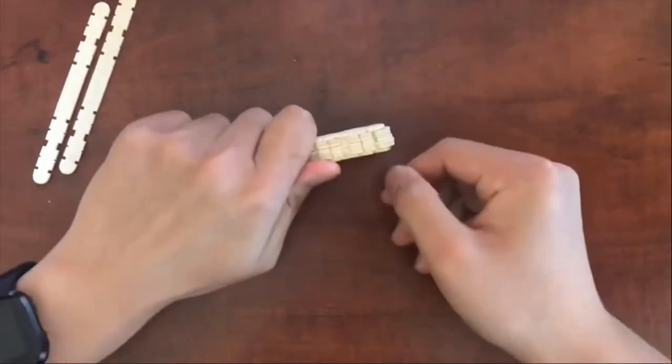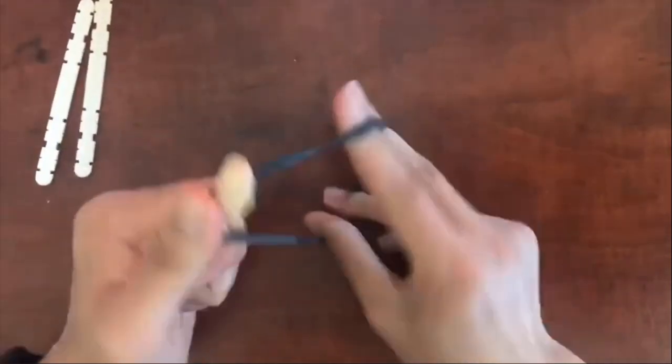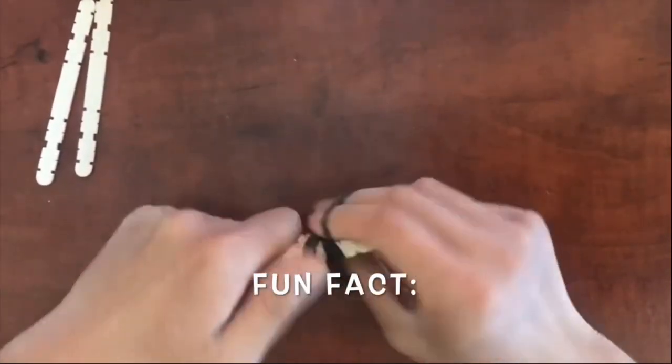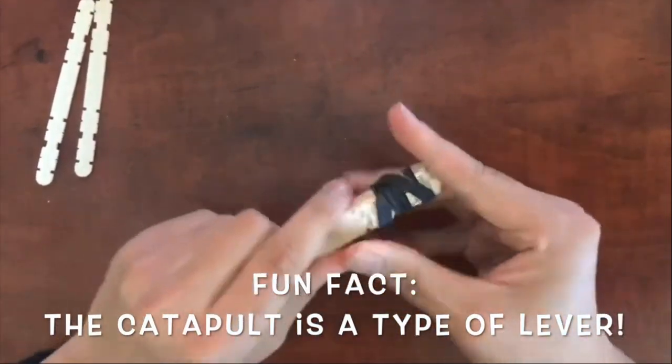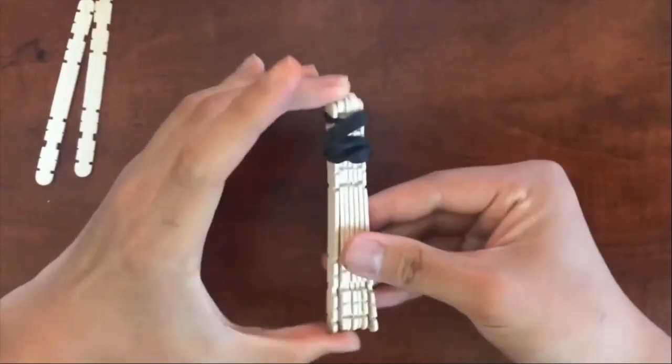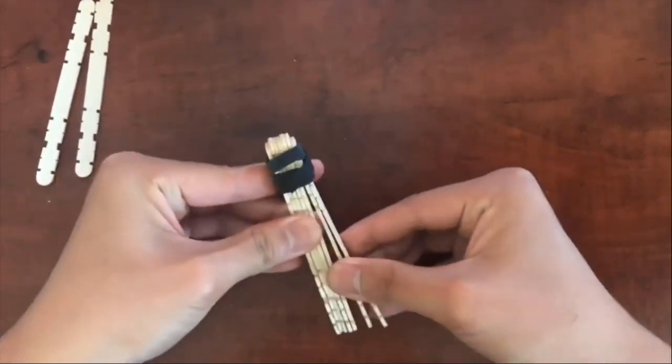Once you have 7, hold them tightly and use a rubber band to secure one side, like so. It should be tight enough so that they don't fall apart, but not too tight so that you can't hold them apart slightly.